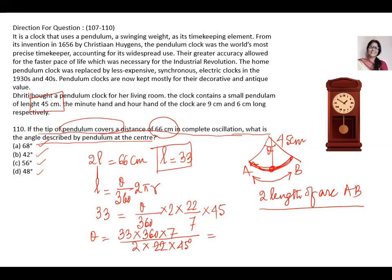Simplify and get the answer. So this will be 11, 3 times 33, 2 times 22. Then next is 360 divided by 4 is 90. 90 into 7 into 3 by 45. Again 45, 2 times 90. So this will be 42 degree. So B is the answer of this question.